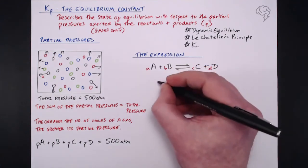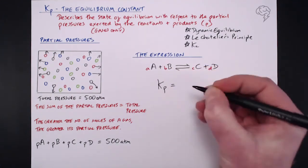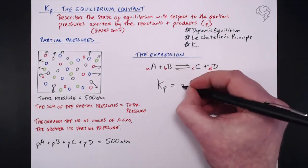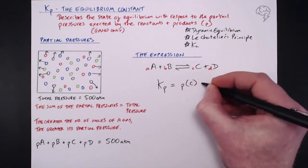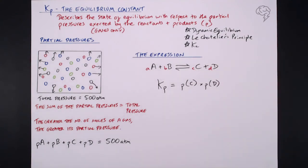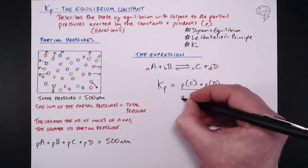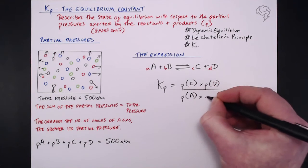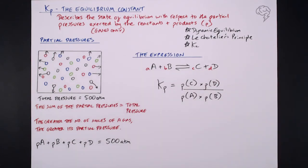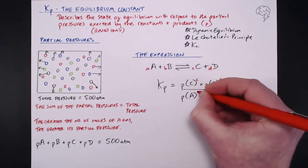So Kp equals the partial pressure of C to the power C, so the power of its number of moles times the partial pressure of D to its power of its number of moles all over our reactants. So the partial pressure of A to the power of its number of moles multiplied by B to the power of its number of moles.